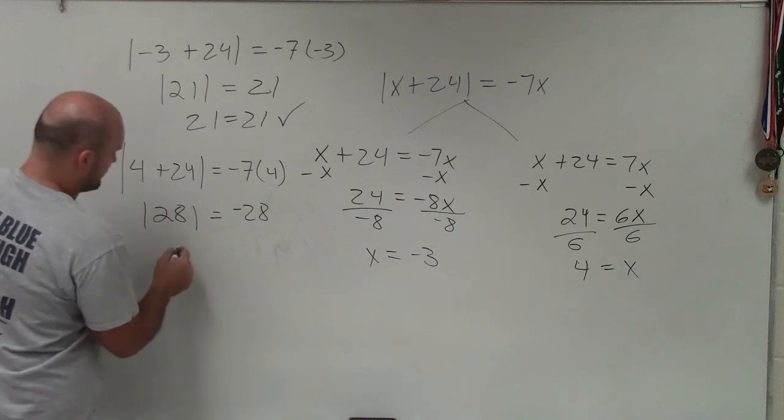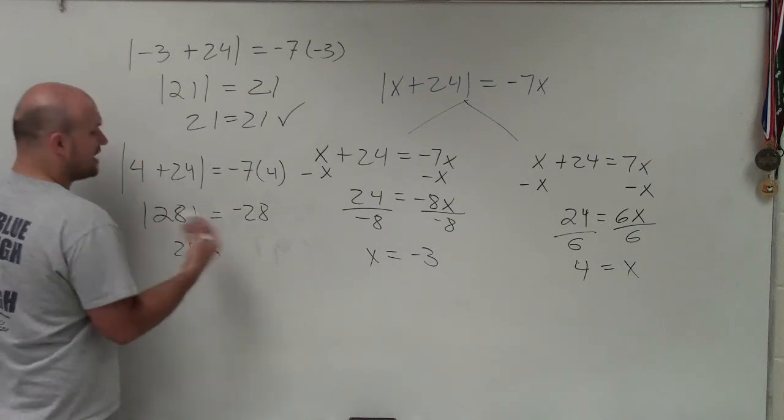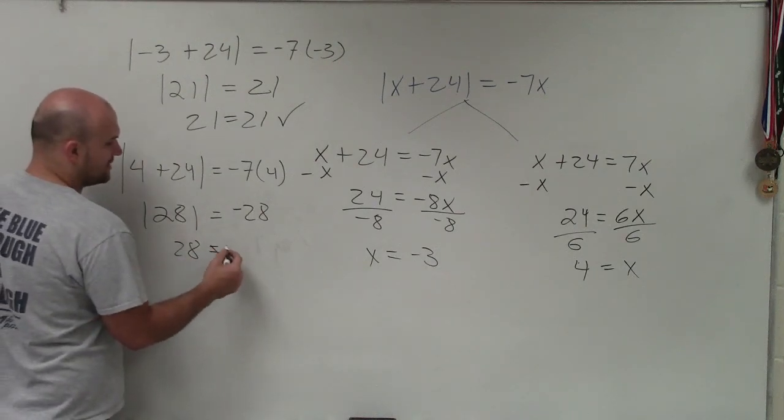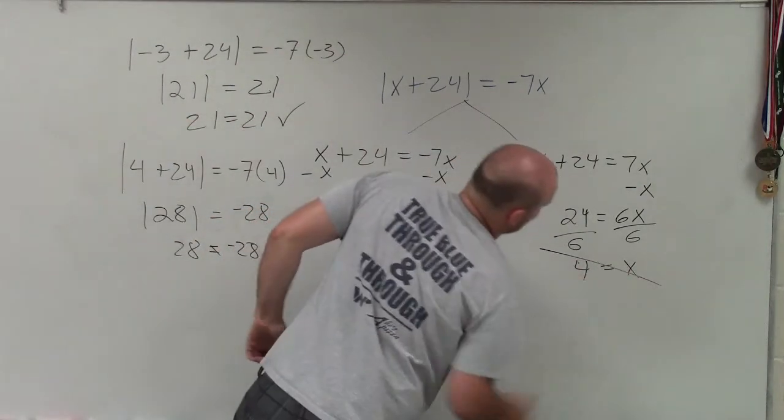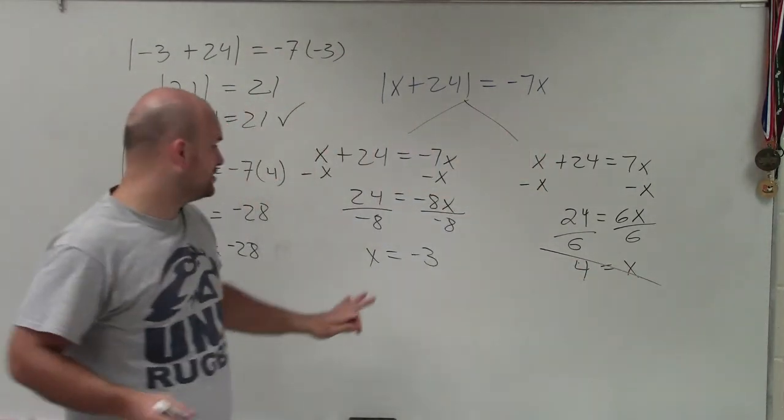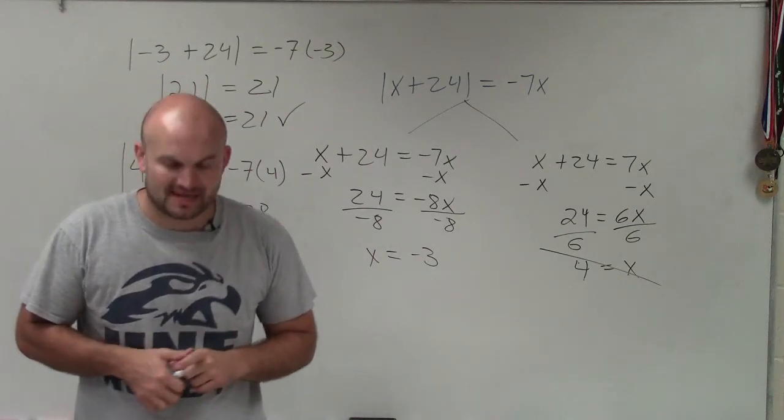Well, here we know that the absolute value of 28 is always going to equal positive 28, but in this case it says it equals negative 28. So therefore, x equals 4 is not a solution. Our only solution is going to be x equals negative 3. Thanks.